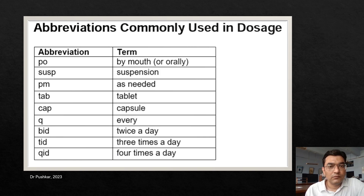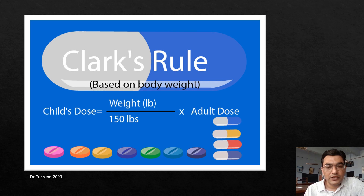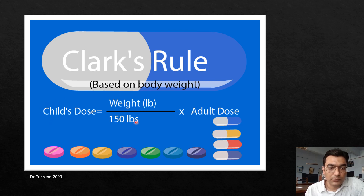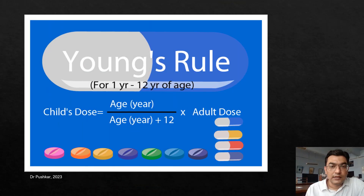Now we will see the most common rules used to calculate the safe dose for a child. The first rule is Clark's Rule, a very important rule based on body weight. The formula is: Child's dose equals weight in pounds divided by 150 pounds, multiplied by the adult dose.